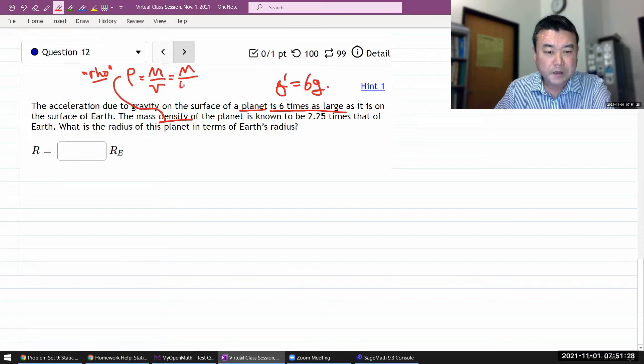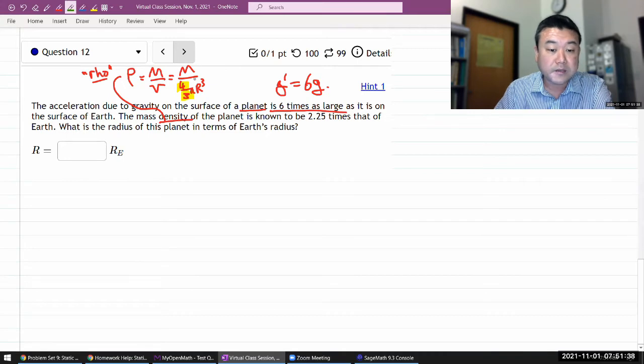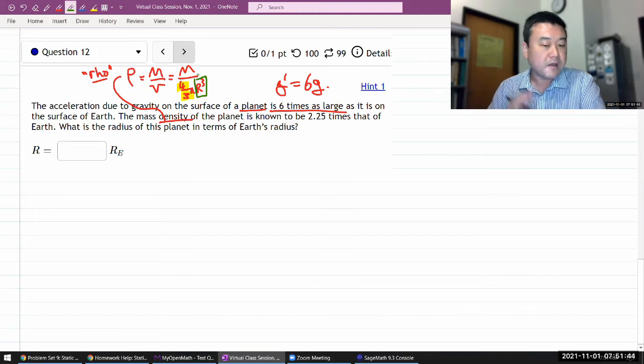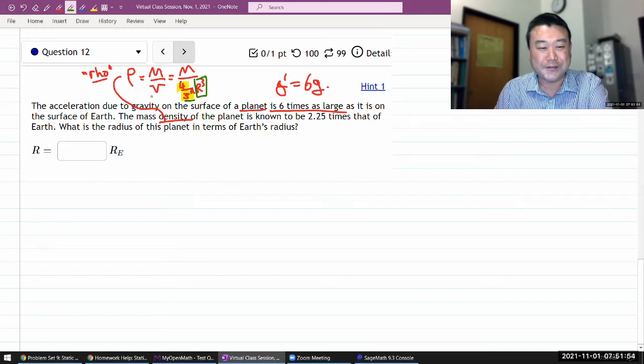What you will see is that these numerical factors don't end up mattering. What will end up mattering is that the volume goes as radius cubed. That's really what matters and you will see in the problem solving steps that any numerical factor that's in front will just cancel out.